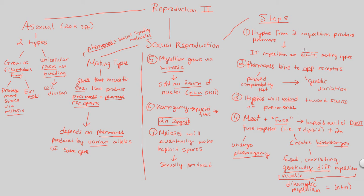Let's quickly go over what happened. Hyphae from two mycelia produce pheromones — pheromone A and pheromone B. There are different mating types. Pheromone A will bind to pheromone B's receptor, giving us genetic variation. In step 3, the hyphae extend toward the source of the pheromones — essentially extending toward the spore that landed from fungi A. Spore B will extend toward spore A, fuse with spore A, but will not fuse the nuclei. The nuclei stay separate from each other.